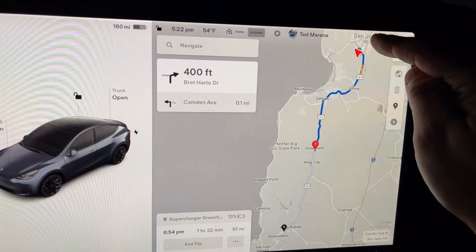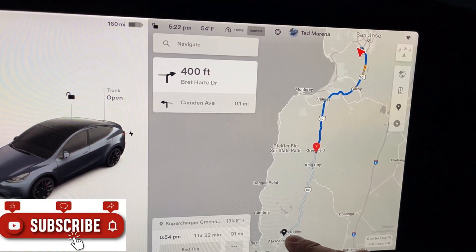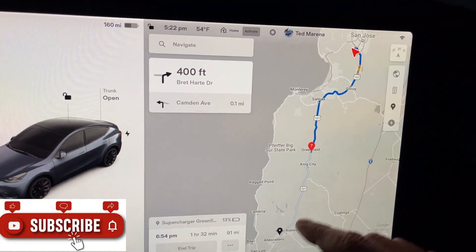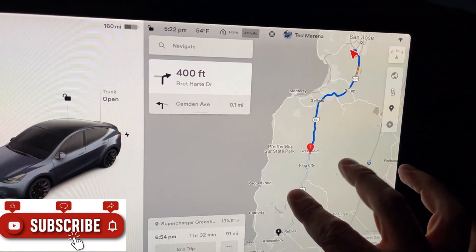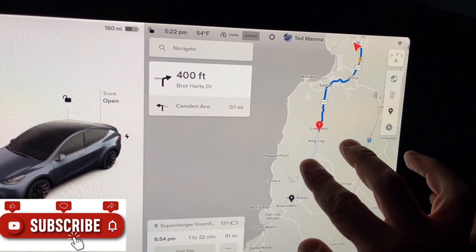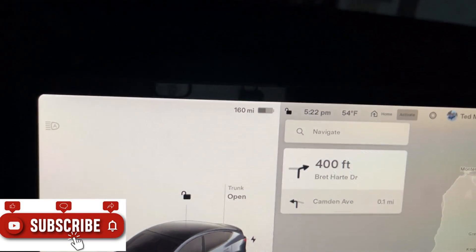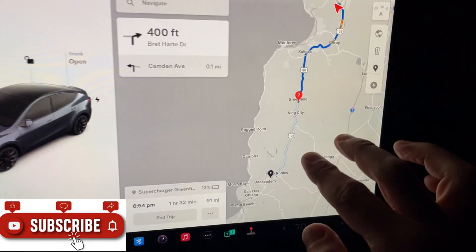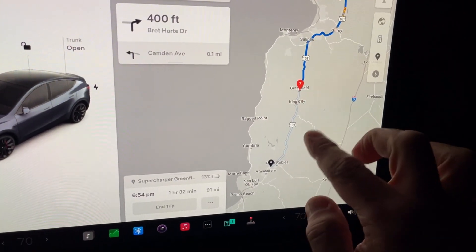I recently took a trip from San Jose all the way down to Paso Robles. It's about 160 miles, and the interesting part about this trip, even though I currently have 160-mile range, it's telling me I wouldn't make it and I need to stop at a supercharger on the way.